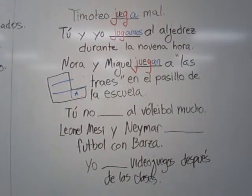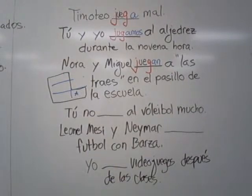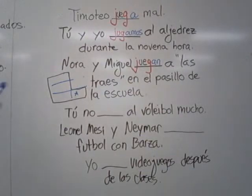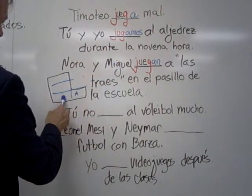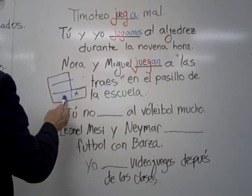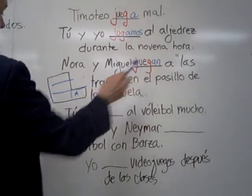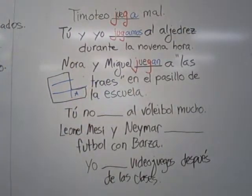Nora and Miguel juegan a las tres en el pasillo de la escuela — Nora and Miguel play tag in the hallway of the school. It is ellos. Miguel is a boy — he has somebody else with him — we move over to the plural side. It is within the boot, so the stem changes. Juegan.